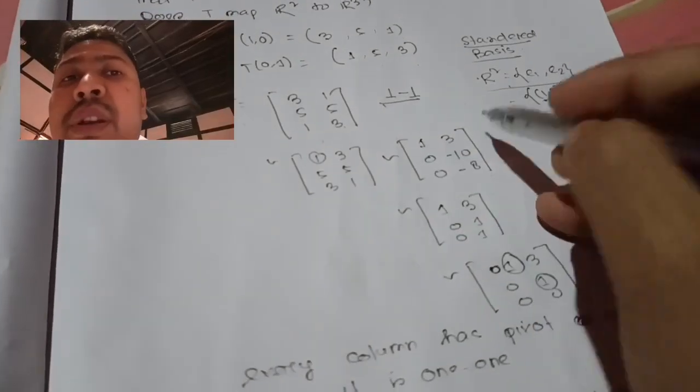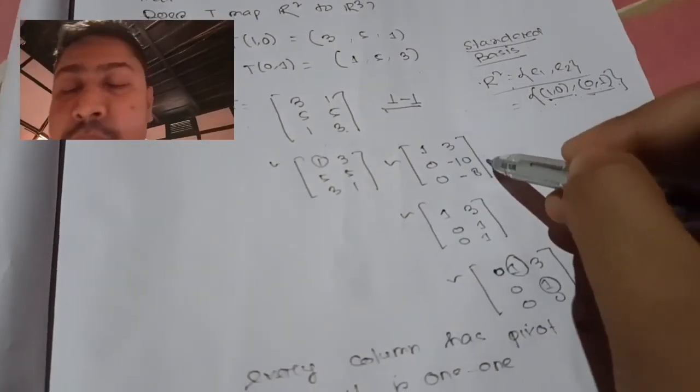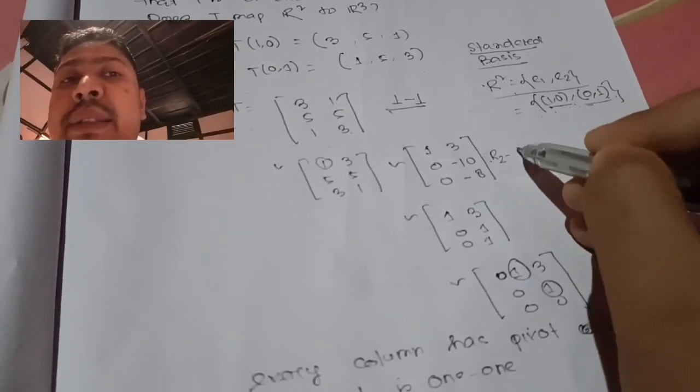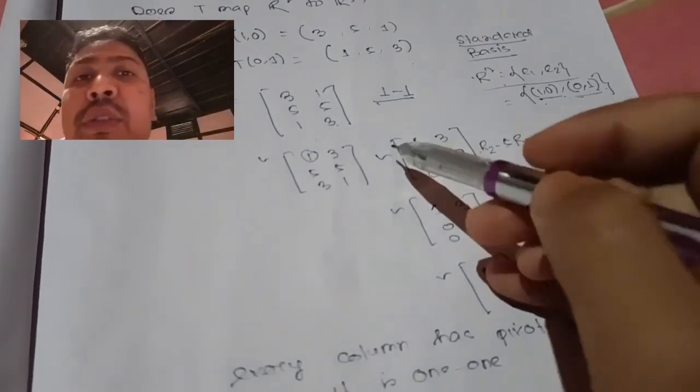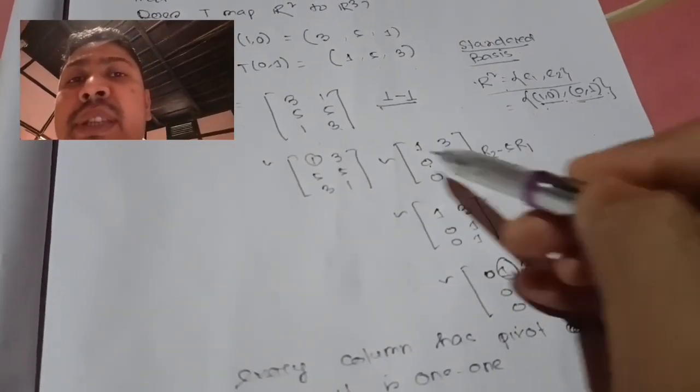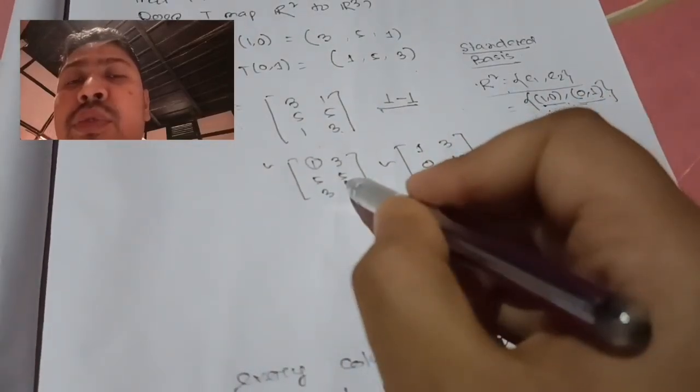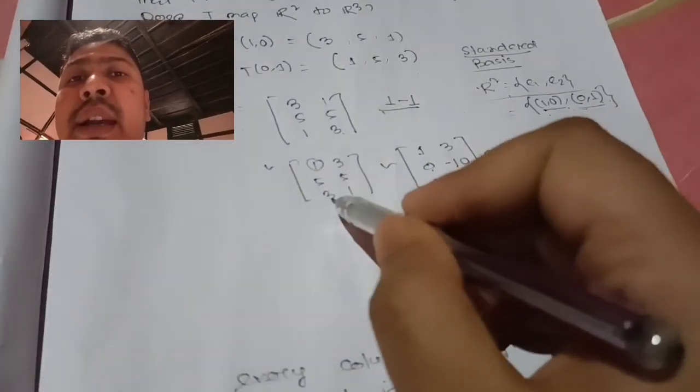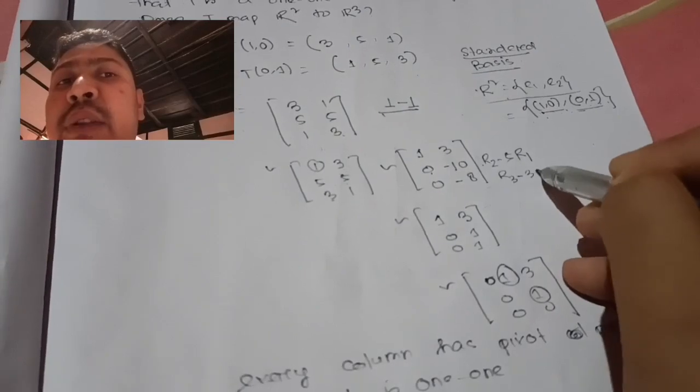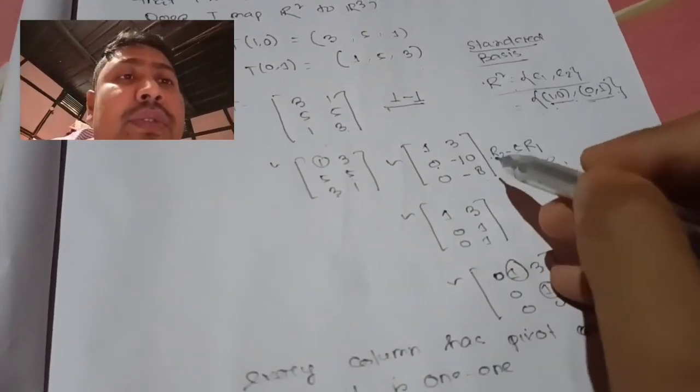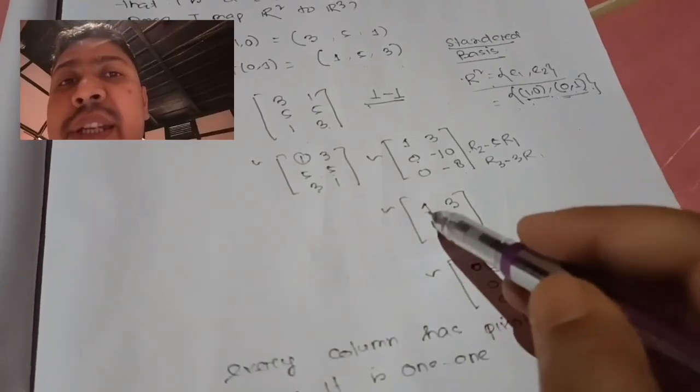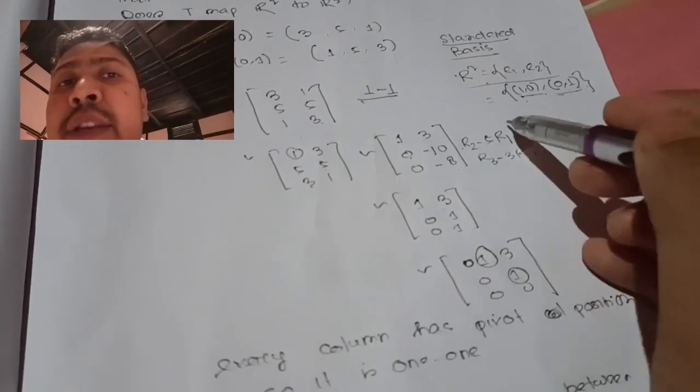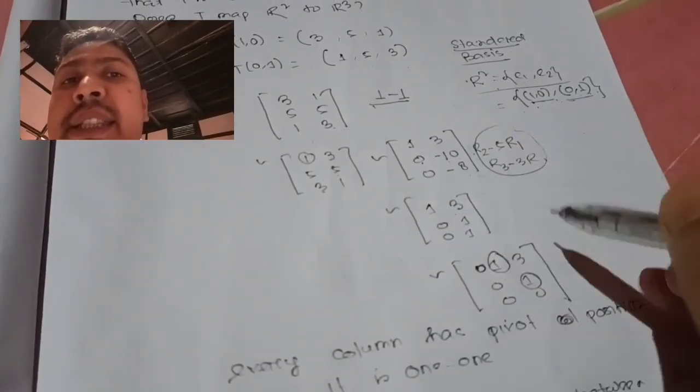Next row transformation: R₂ - 5R₁ gives [1 3; 0 -10; 3 1]. Then R₃ - 3R₁ gives [1 3; 0 -10; 0 -8]. Now I have the matrix in this form.